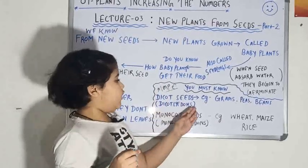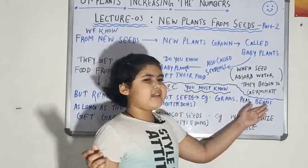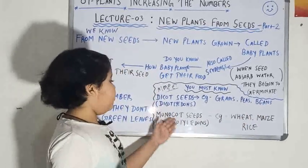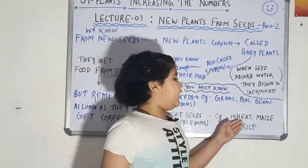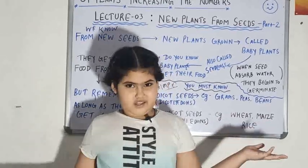The examples of dicotyledons are grams, peas, beans etc. And the examples of monocotyledons are wheat, maize, rice etc.